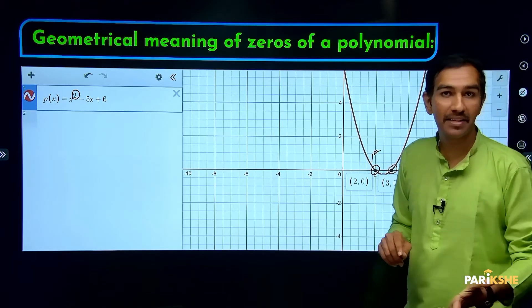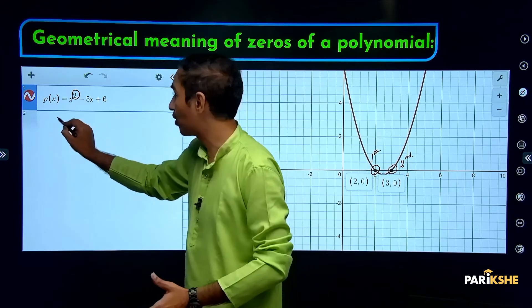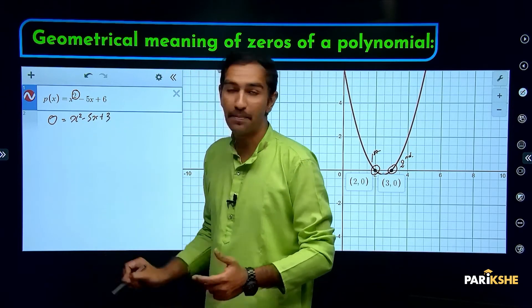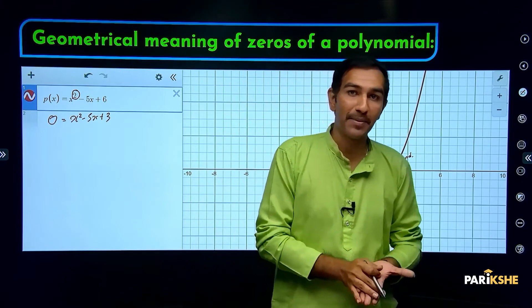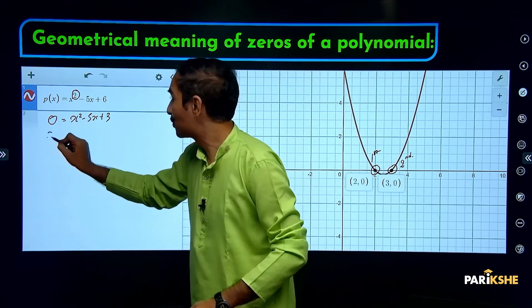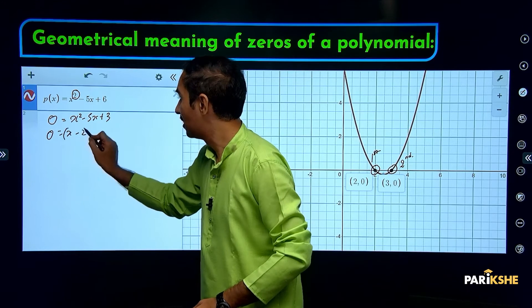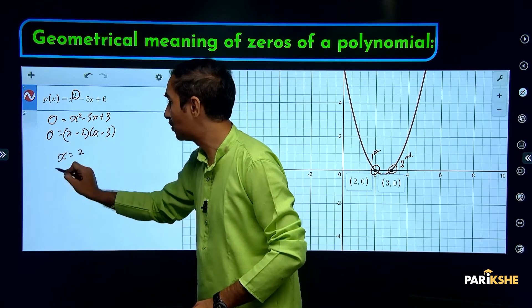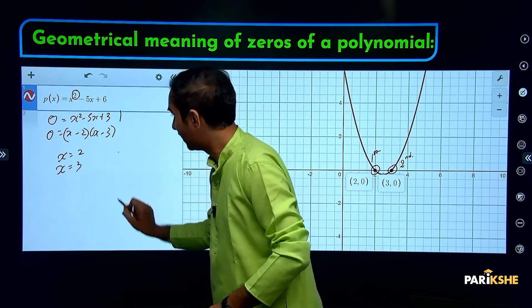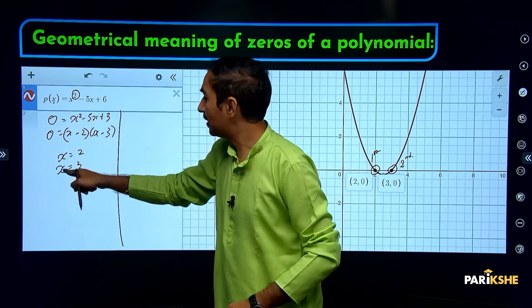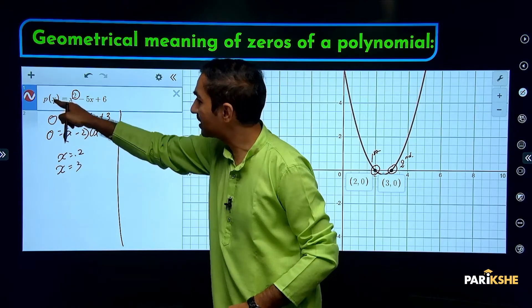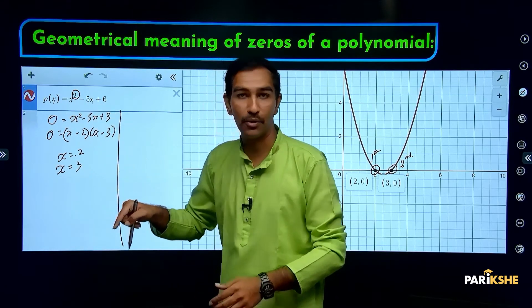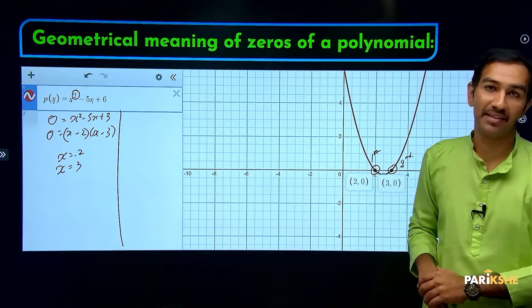Let's verify algebraically. First step: make p(x) equal to zero. For quadratic polynomials, we need to factorize. 0 = x² - 5x + 6 = (x - 2)(x - 3). So x = 2 or x = 3. When x takes the values 2 or 3, the answer becomes zero.